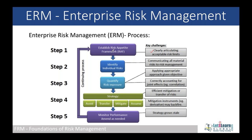Once you define and establish the risk appetite framework, the next step is to identify the various risks. Once we identify the risks, we need to quantify them — what is the impact of the risk? Based on that we can maintain a strategy: to avoid the risk, transfer the risk, mitigate the risk, or assume the risk, which is called accepting the risk. We then need to monitor the performance of the risk factors, risk management techniques, tools, and policies we used on a continual basis.